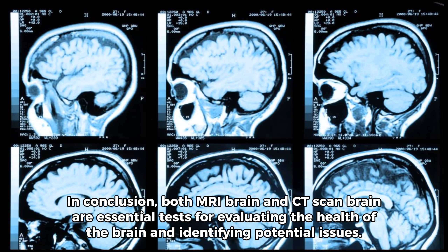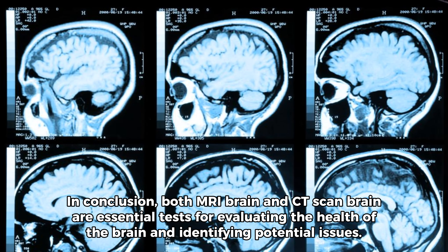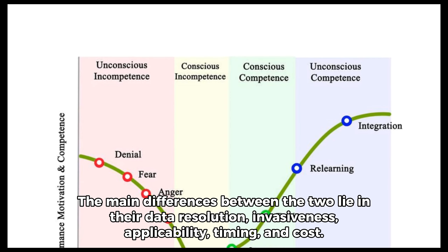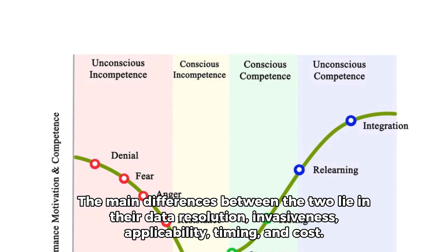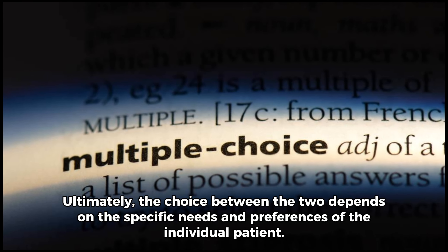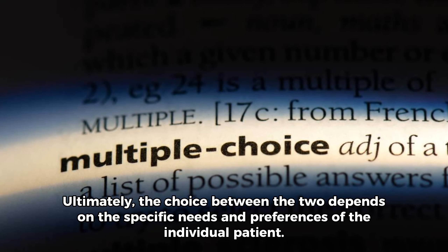In conclusion, both MRI brain and CT scan brain are essential tests for evaluating the health of the brain and identifying potential issues. The main differences between the two lie in their data resolution, invasiveness, applicability, timing, and cost. Ultimately, the choice between the two depends on the specific needs and preferences of the individual patient.